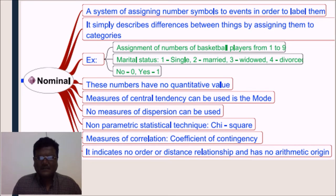Another example, marital status: Single 1, married 2, widowed 3, divorced 4. Similarly, 0 for no and 1 for yes. These numbers have no quantitative value.